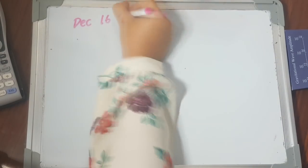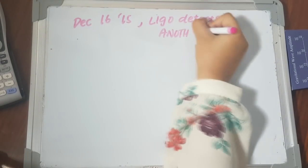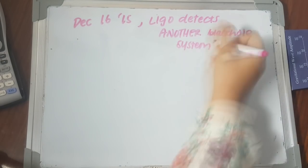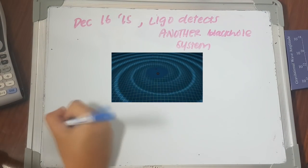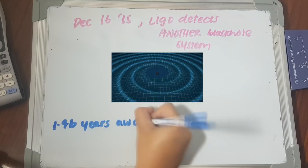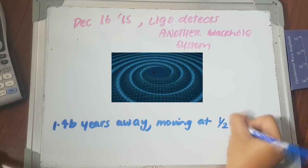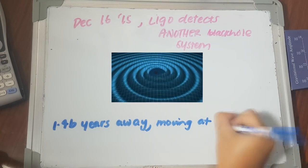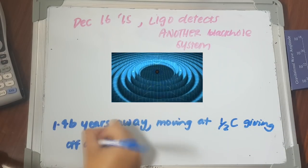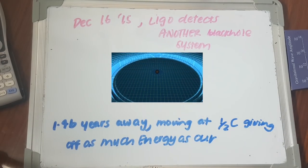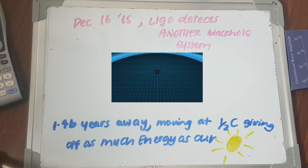Soon after, on December 16th, 2015, LIGO again received a signal from a binary black hole 1.4 billion years away. They were orbiting at half the speed of light to give off as much energy as our sun. Scientists compared the two signals from the previous detection and this detection, and found that the second was subtler and longer.